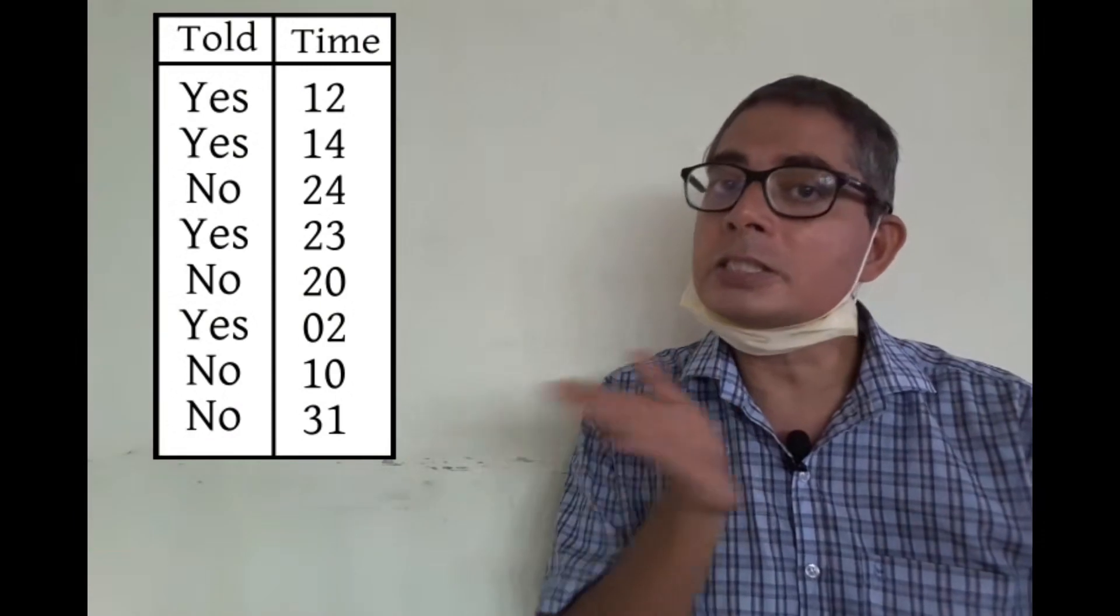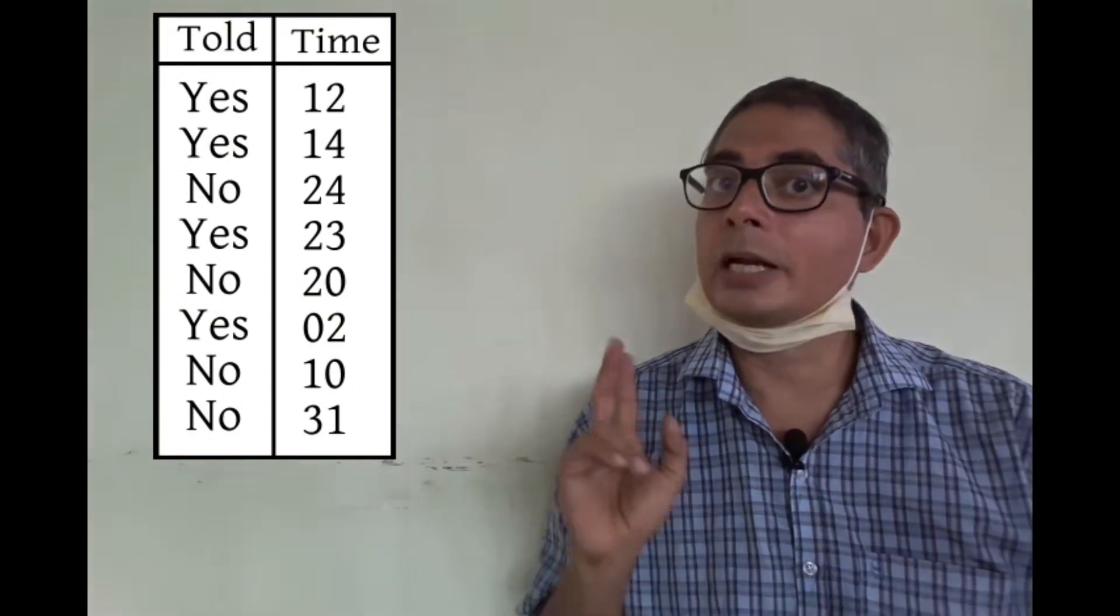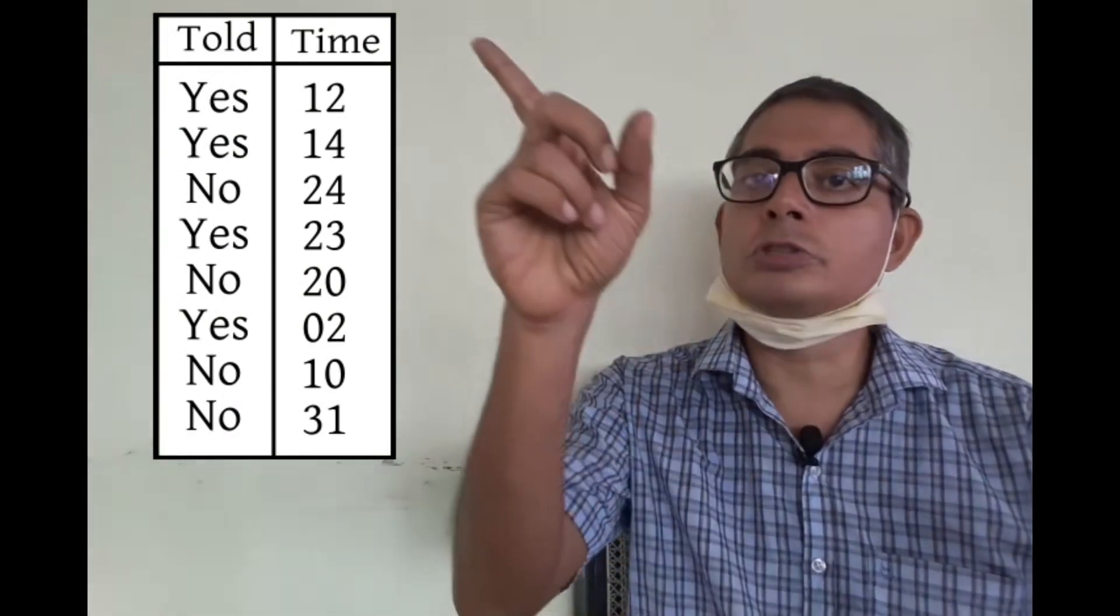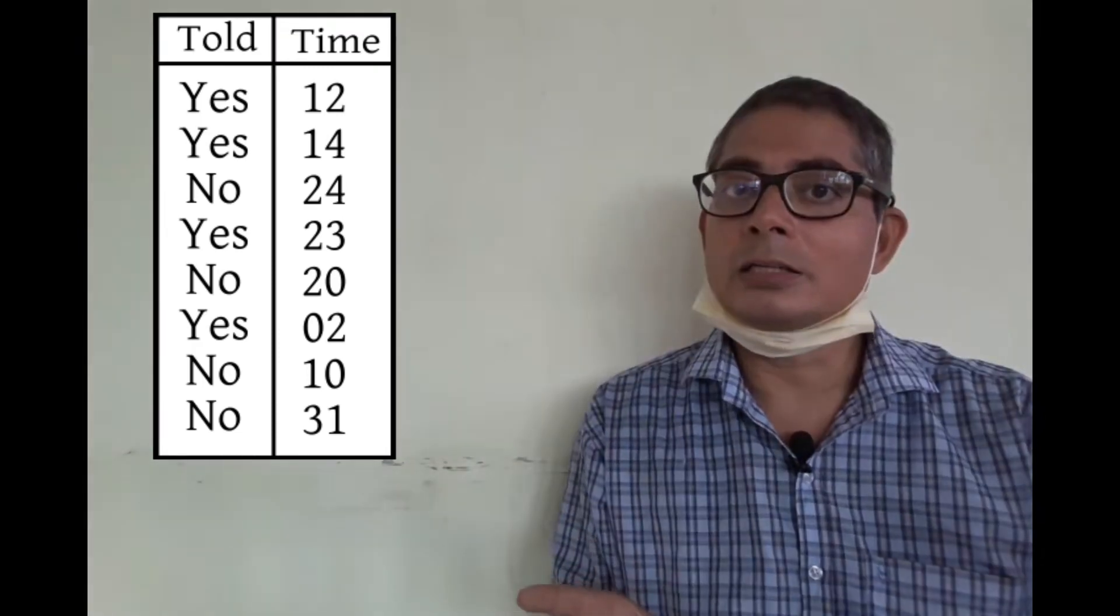Now this may not look like multivariate data, but it is. Here each person is a case and there are two variables: the fusion times and the group to which the persons belong.